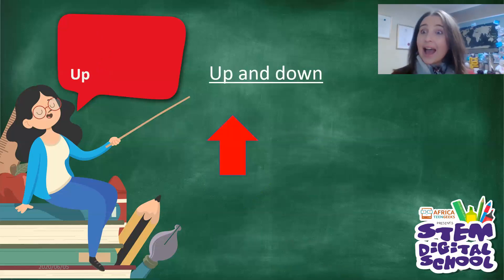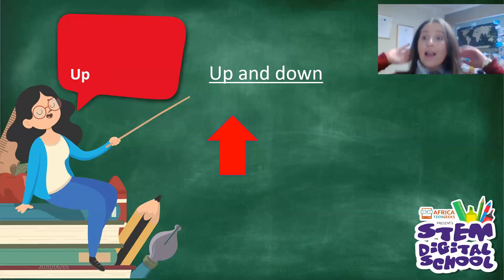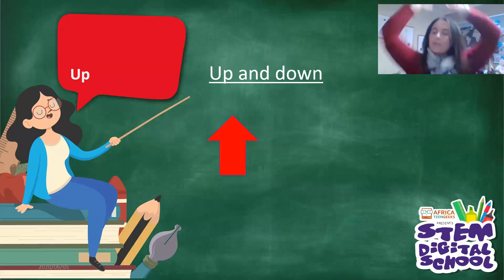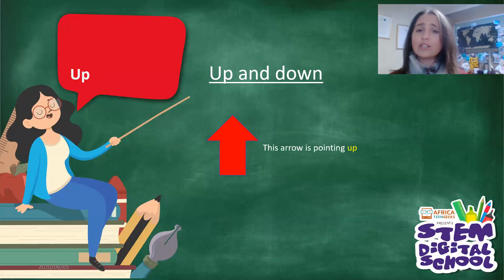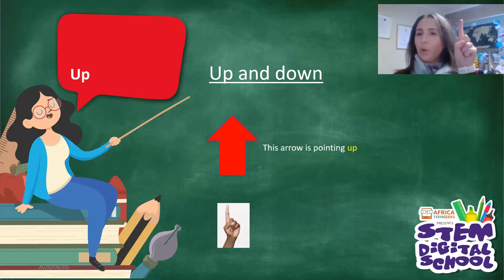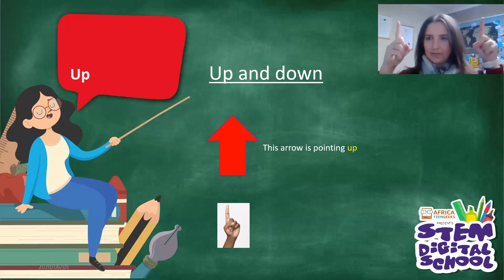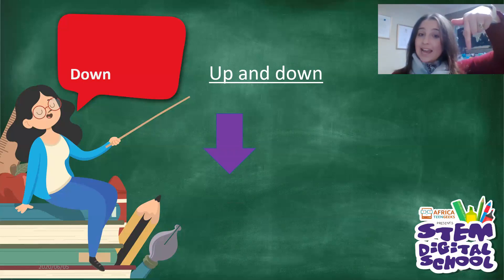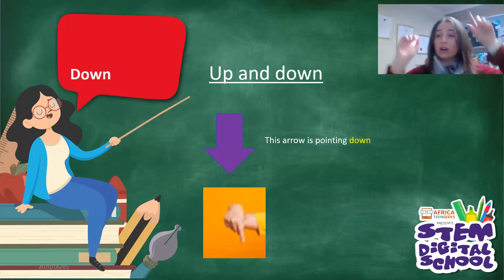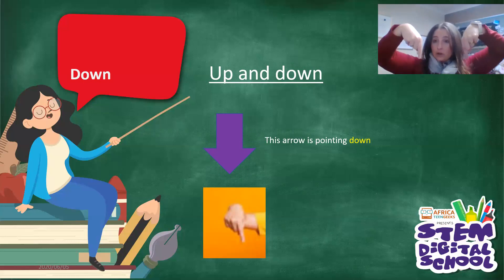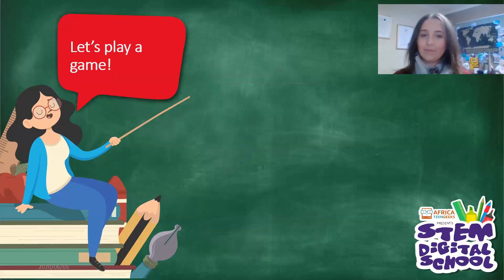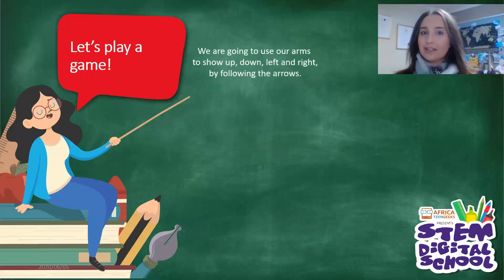Up and down — this arrow is pointing up. Can you stand on your tippy toes and go up? The arrow is pointing up into the sky. Can you point up with your fingers? You can also use your hands if you want, pointing up. Our arrow is now pointing down. Now take your up fingers and turn them around and put them upside down.